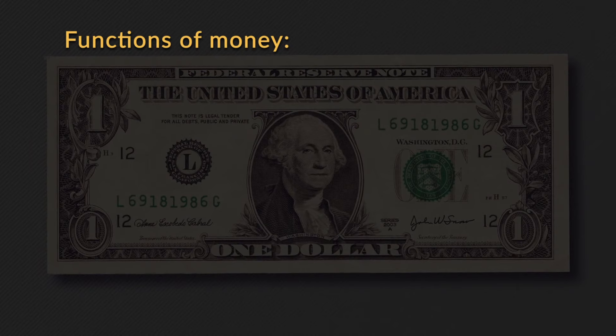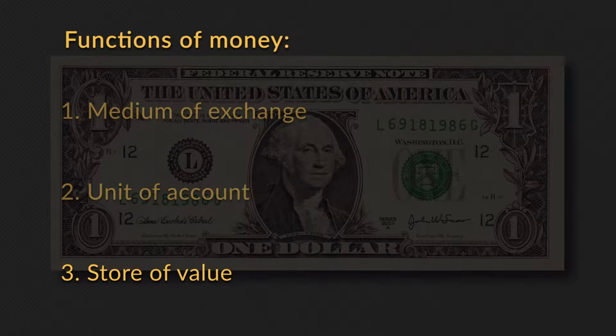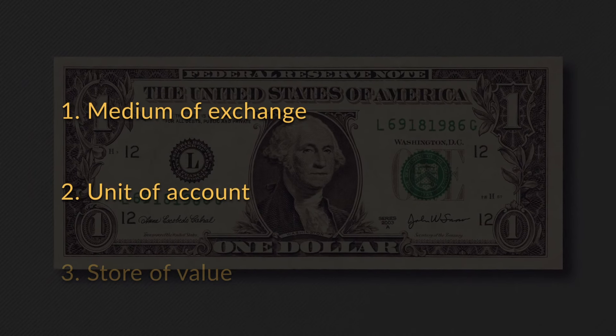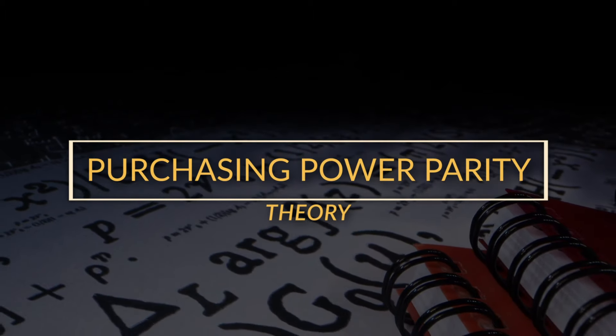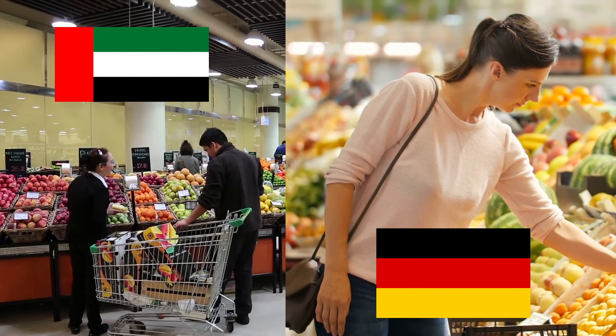A currency is a tricky thing to price because it is money, and money has three major functions: it is a medium of exchange, a unit of account, and a store of value. The first major theory of what determines the exchange rate focuses on the first two aspects — medium of exchange and unit of account. This theory is known as the purchasing power parity theory. The main idea of purchasing power parity is that prices in two countries should roughly be the same. If they are not, that means that arbitrageurs can come in and make a bit of quick and easy money.